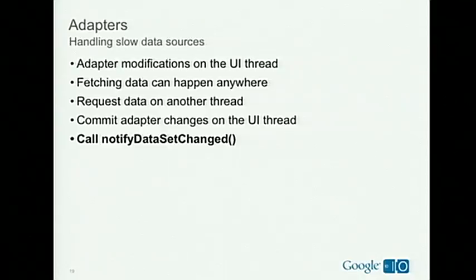When you have a slow data source — fetching over a network, reading a large file — you won't be able to keep up on the UI thread and remain responsive. Fetching data can happen anywhere: spin off another thread, send a network request. But the important thing is to always commit your adapter changes on the UI thread. Make sure you call notifyDataSetChanged, and call it in the same UI event where you commit changes to the adapter — you can't change the adapter and then sometimes later send notifyDataSetChanged, because in between there might be a layout request and ListView will have conflicting data.